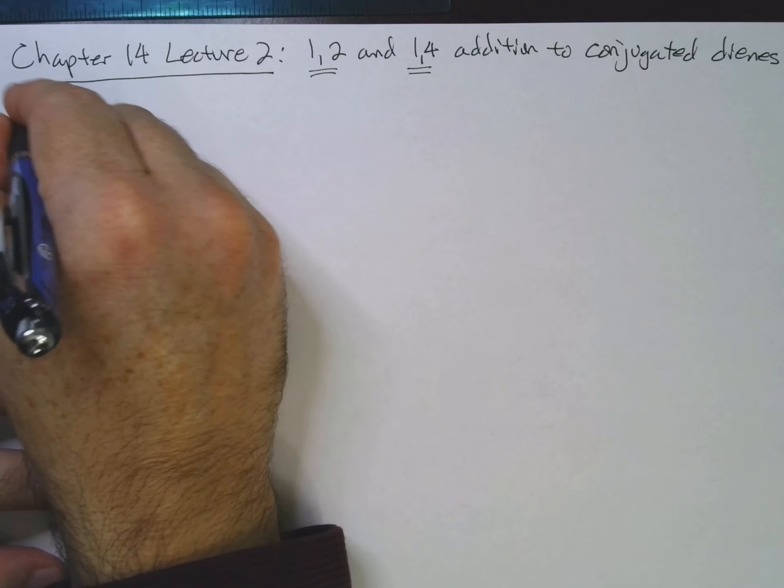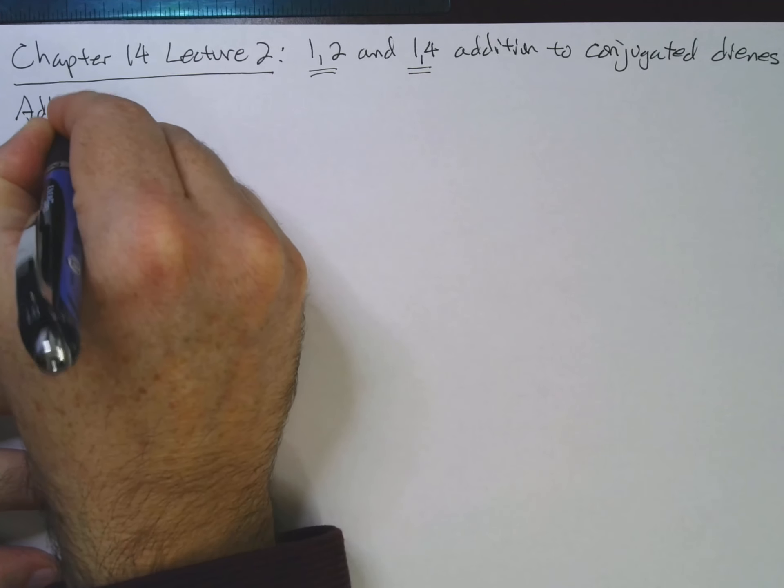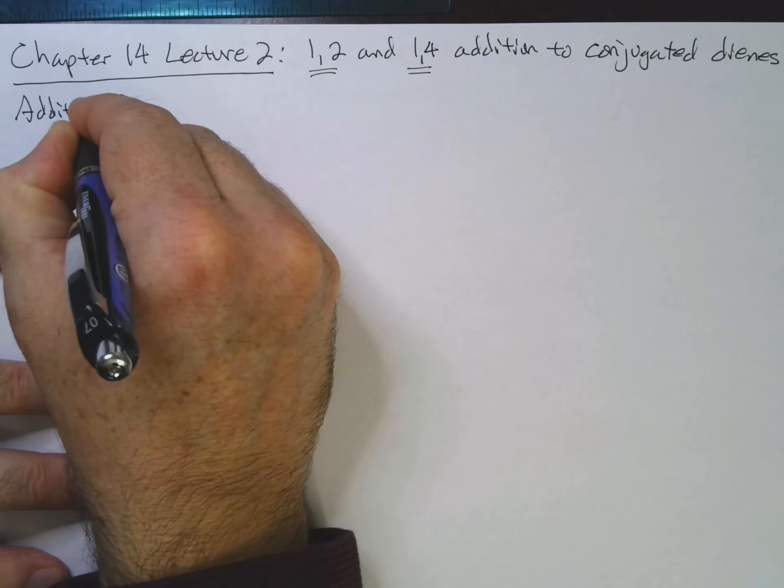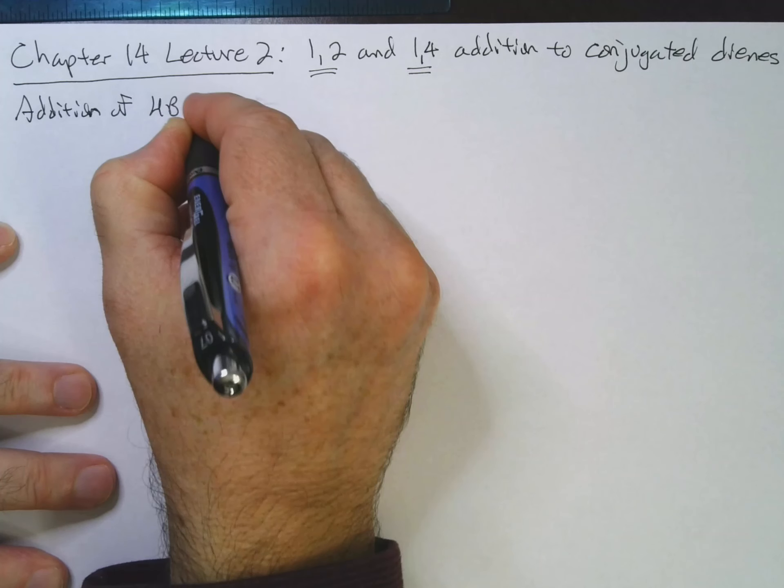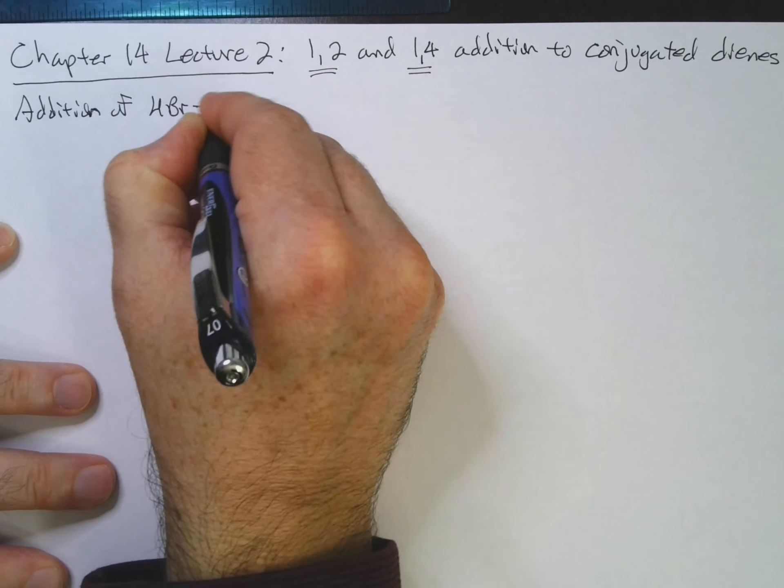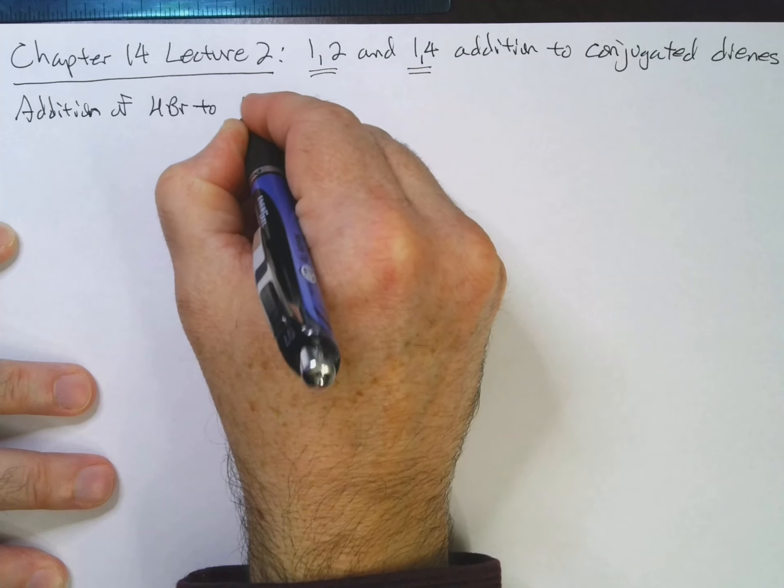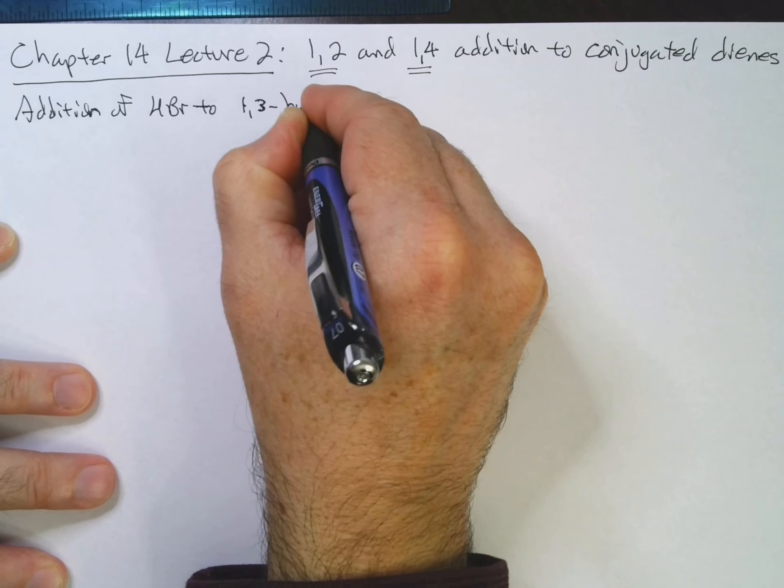So let's look at this addition. We'll add HBr to 1,3-butadiene.